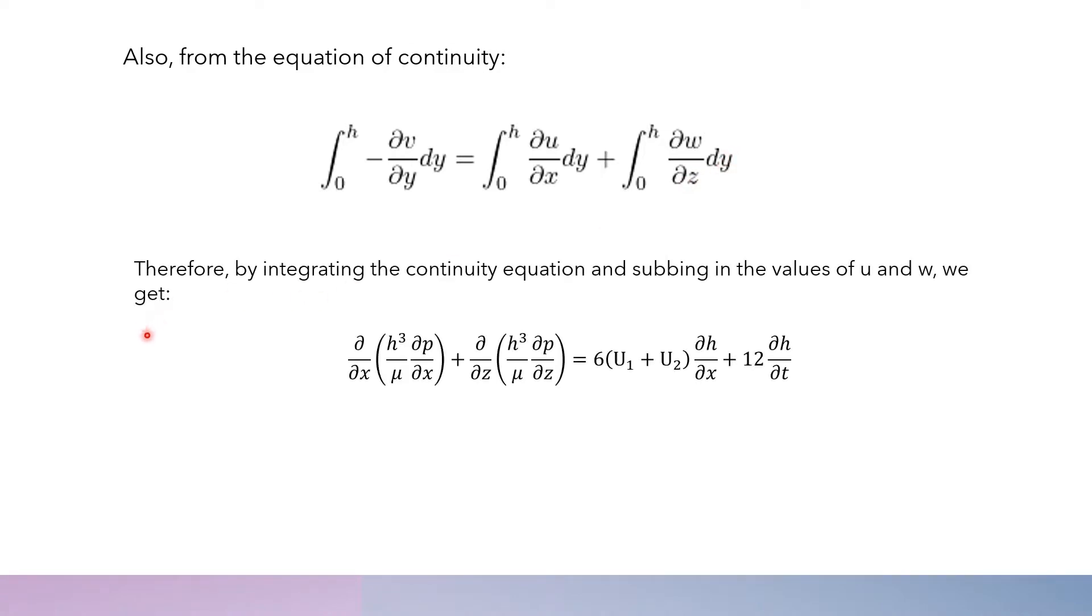Therefore, by integrating the continuity equation and subbing in the values of U and W which we have determined, we get the following equation, which is the general Reynolds equation.